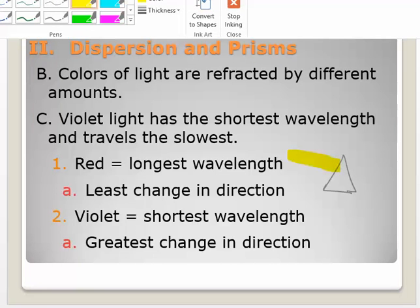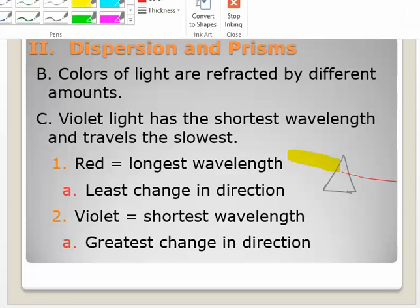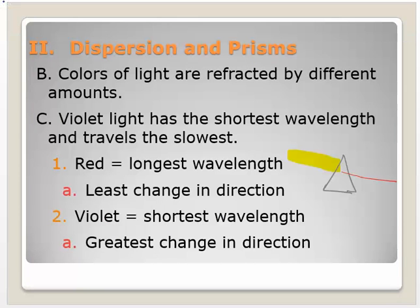Well, what's going to come out of here? We know that red has the longest wavelength and has the least change in direction, so the reds are going to come out of here with very little change in direction. The violet has the shortest wavelength and is going to have the greatest change in direction. Well, I don't really have violet, but I do have blue, and it's going to have this big change in direction.